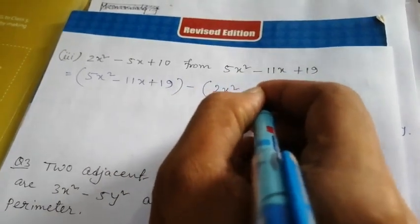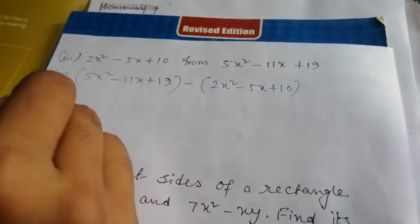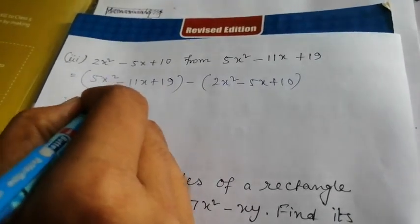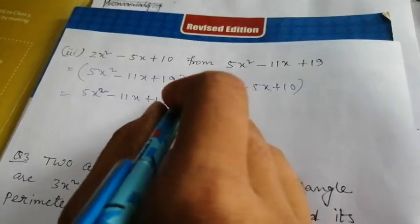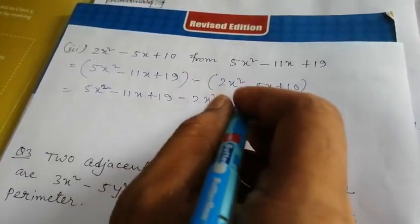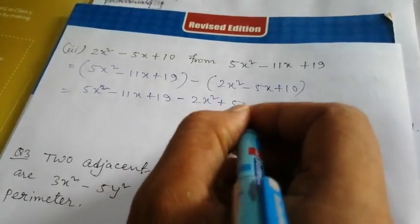Now 5x² - all of you open this bracket. Which bracket? Minus plus minus. So we have 2x² minus minus becomes plus, 5x minus plus becomes minus, and minus 10 becomes plus 10.